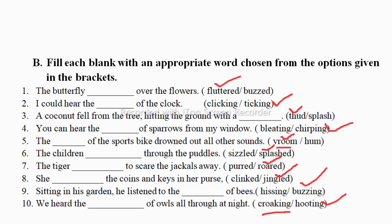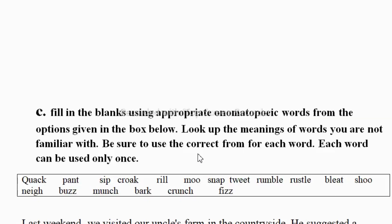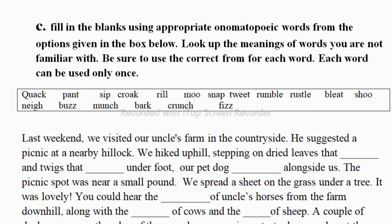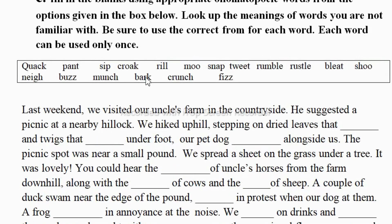Let's move to the third exercise. You won't get this exercise in your exam. Fill in the blanks using appropriate onomatopoeia words from the options given in the box below. Look up the meaning of words you are not familiar with. Be sure to use the correct form for each word, and each word can be used only once. You won't get this bit in your exam, but you should learn these keywords — they might ask questions from these keywords.